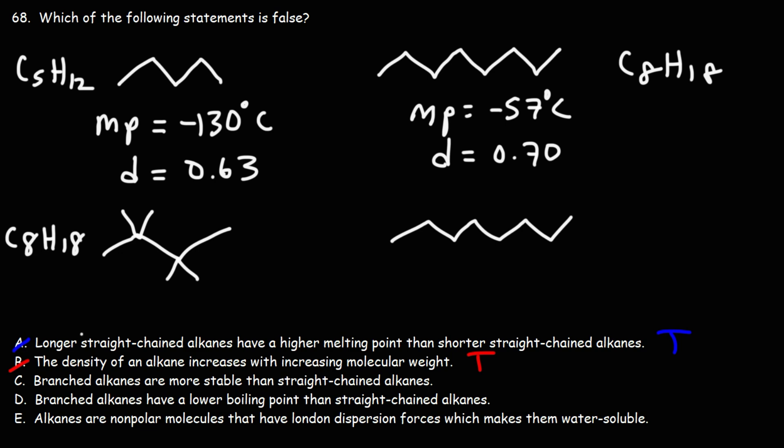In a previous problem, we talked about the heat of combustion for 2-2-3-3 tetramethylbutane. It was negative 5452 kilojoules per mole, but for octane, it was negative 5470 kilojoules per mole.